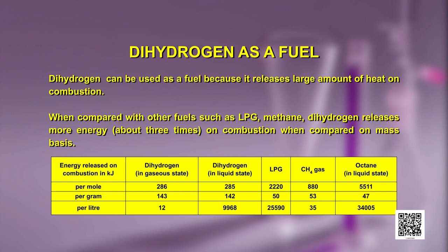The table here compares different fuels per gram of fuel combusted. Dihydrogen in the gaseous state gives 143 kilojoules per gram, and in the liquid state gives 142 kilojoules per gram. In comparison, LPG gives only 50 kilojoules, methane gas gives only 53 kilojoules, and octane gives only 47 kilojoules per gram. Definitely, hydrogen is a better fuel when comparing energy released per gram.